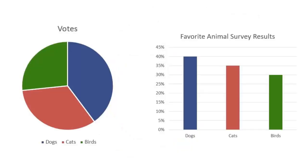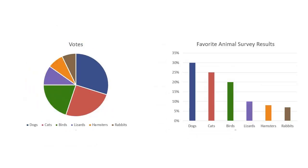It's important to know that pie charts are not always the right answer for making comparisons. If your numbers are closer together, like 25%, 30%, and 40%, it's hard to tell from a pie chart which values are bigger. A column chart is usually a better option, since it's easier to compare similar values and easier to read when you have a lot of different categories.